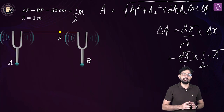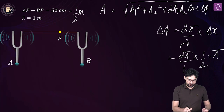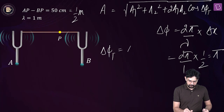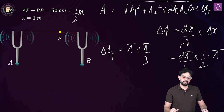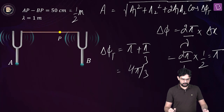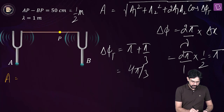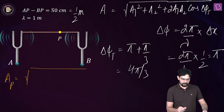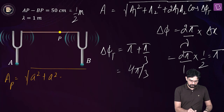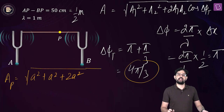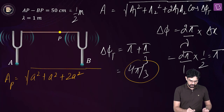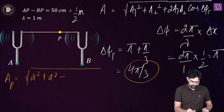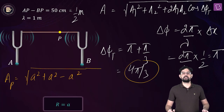There is already a phase difference of pi by 3. So the total phase difference delta phi total is pi plus pi by 3, which equals 4 pi by 3. The resultant amplitude at point P is the square root of A squared plus A squared plus 2A squared into cos of 4 pi by 3. Cos of 4 pi by 3 is minus 1/2, so this becomes minus A squared, and the resultant amplitude equals A.